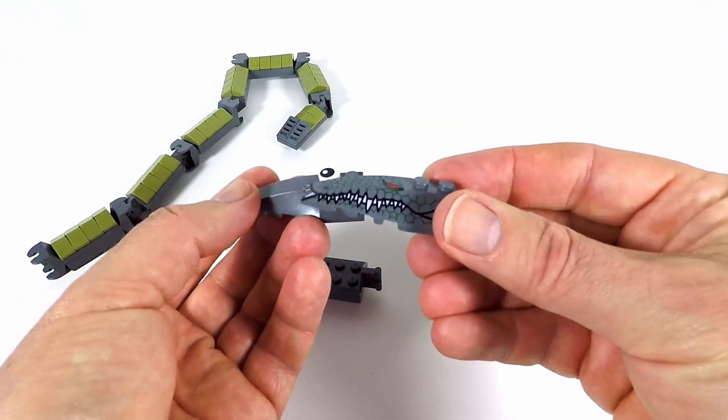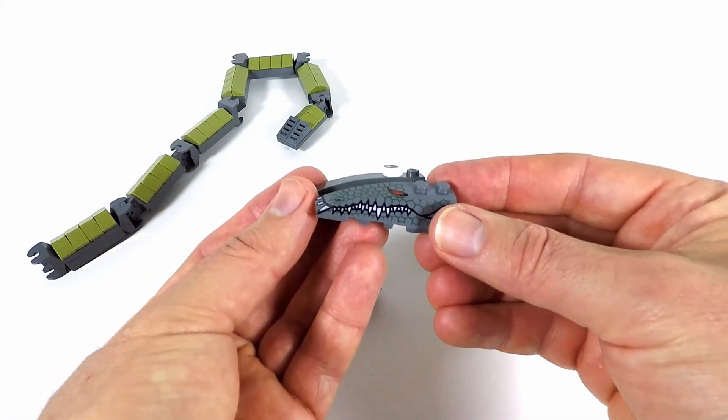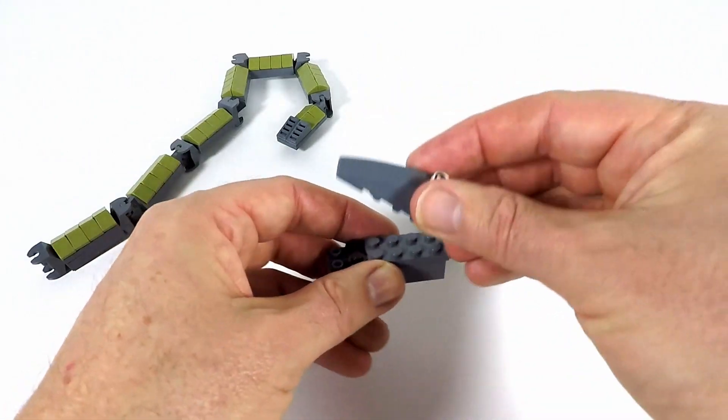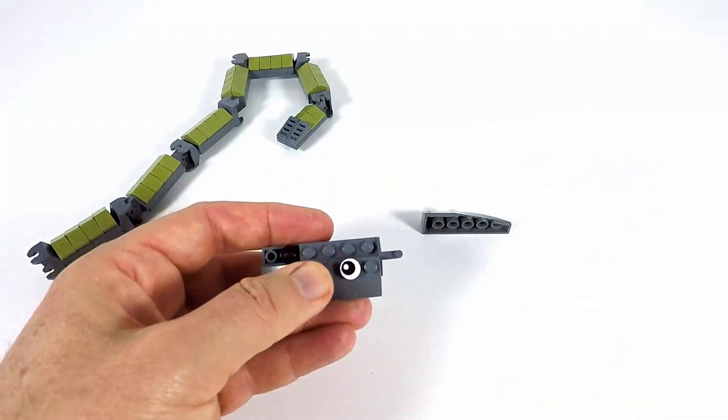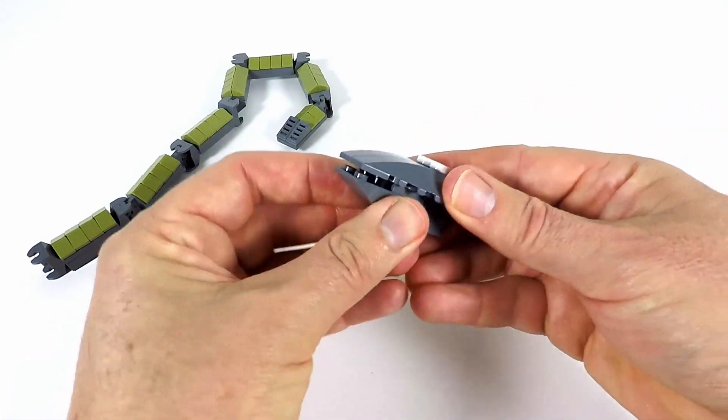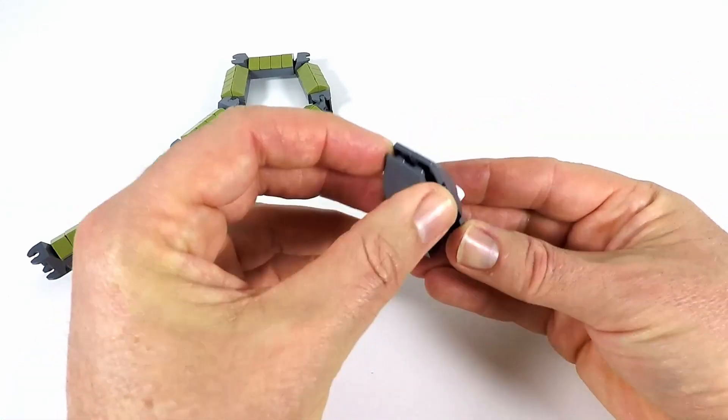So if you wanted a scary crocodile looking thing, you could actually put that in front instead of the snake. But I like these best. And I always like these eyes. So we'll pop this on top like that. So you've got a wider top and a smaller bottom.